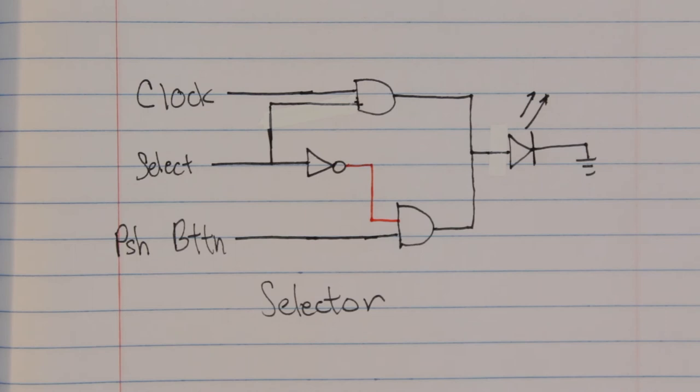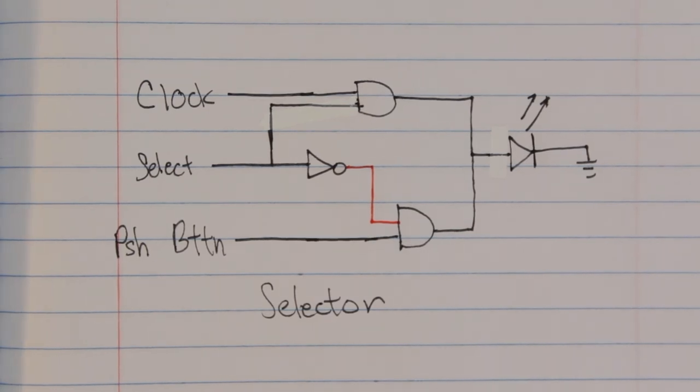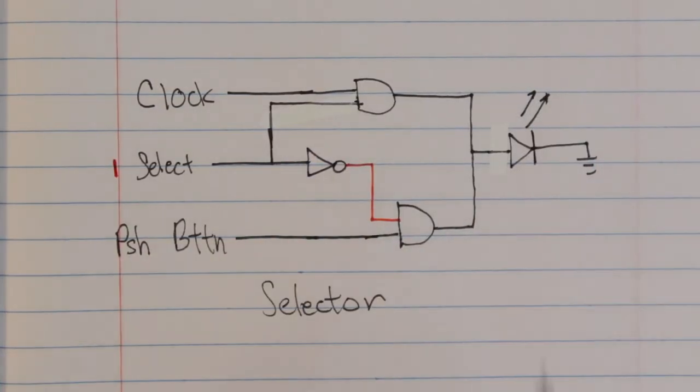Naturally the next question is: okay, so we can select between automatic and manual clock, where does the halt line come into play? Well if you think about it, we just built it.